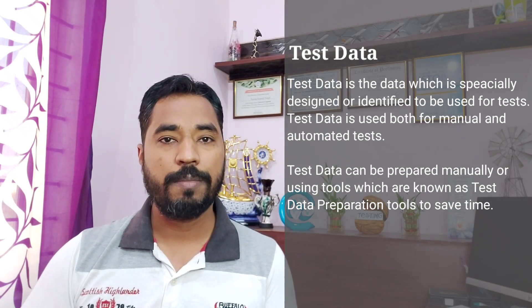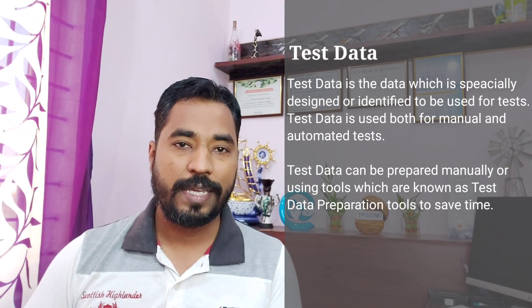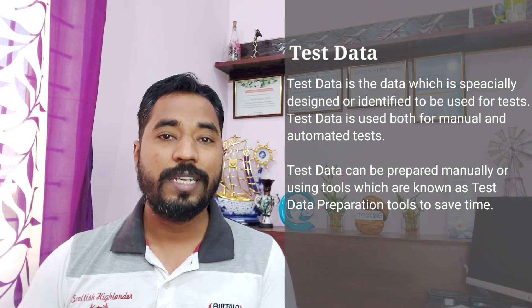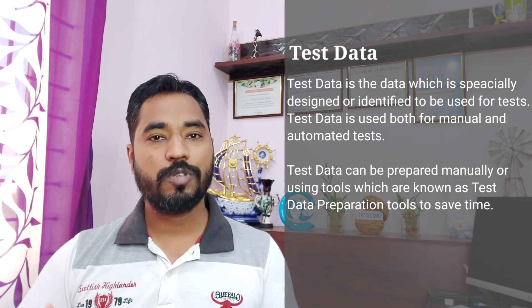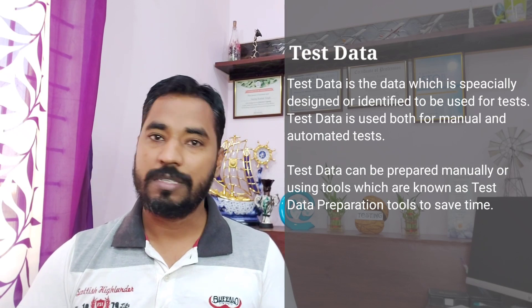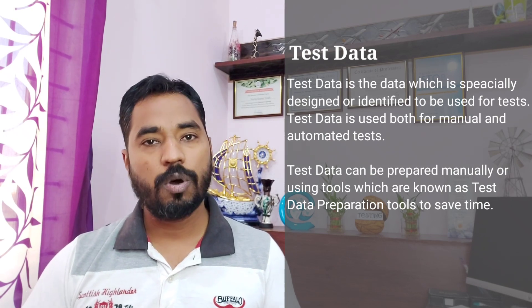Any field which requires data can be of different types. For example, when it comes to name, it includes only characters; when it comes to phone number, it includes only digits and up to 10 digits only; and when it comes to email address, it follows a different format, and so on.